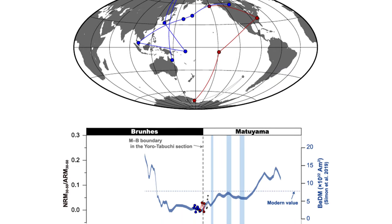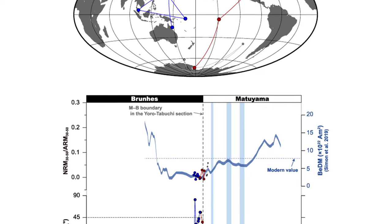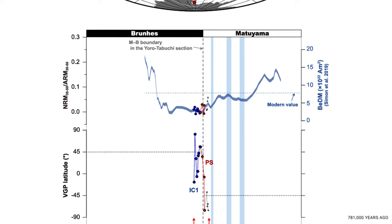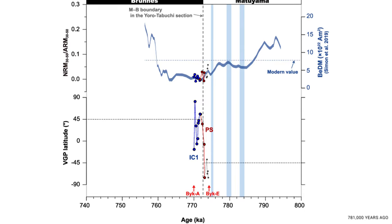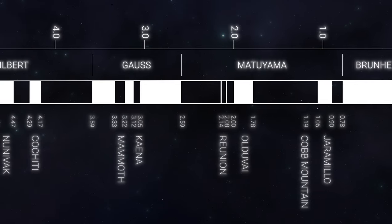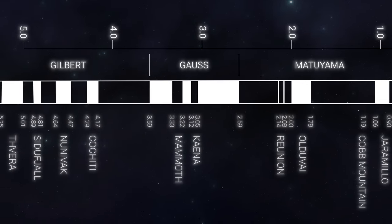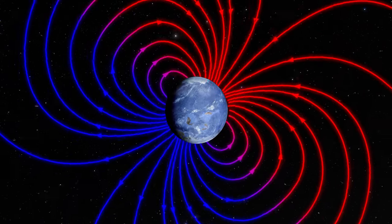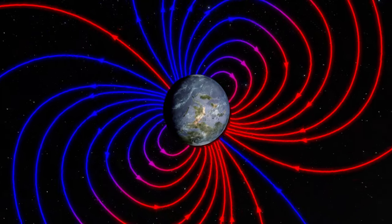The most recent of these reversals, the Bruns-Matayama reversal, occurred about 781,000 years ago. These reversals are irregular and unpredictable, with intervals ranging from tens of thousands to millions of years. This process is gradual and takes thousands of years.